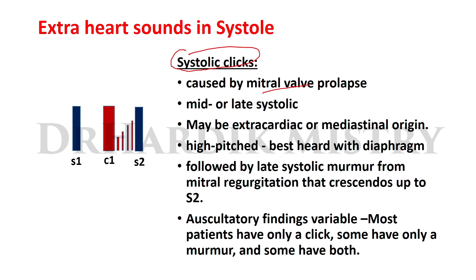The second type of extra heart sound in systole is systolic clicks, caused by mitral valve prolapse. They occur during the mid or late systolic phase and may be extracardiac or mediastinal in origin. They are high pitch, best heard with the diaphragm, and followed by late systolic murmurs from mitral regurgitation that crescendo up to S2.